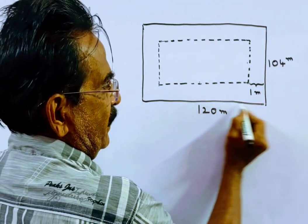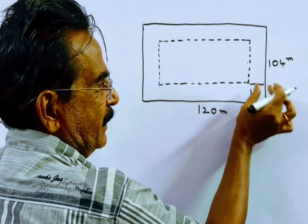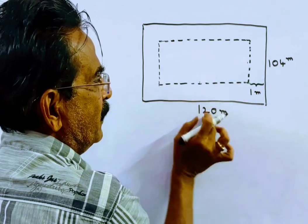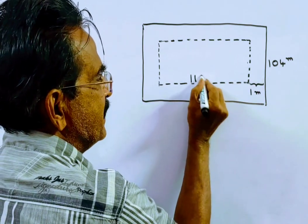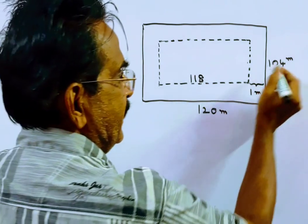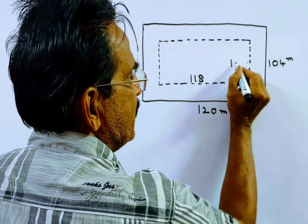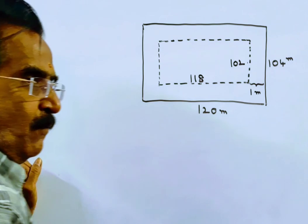See friends, this is 120. So 120 minus 2, inside length is 118. 104 minus 2, inside breadth is 102.